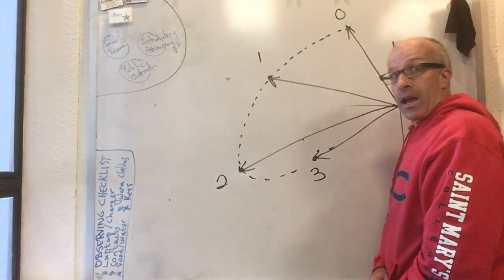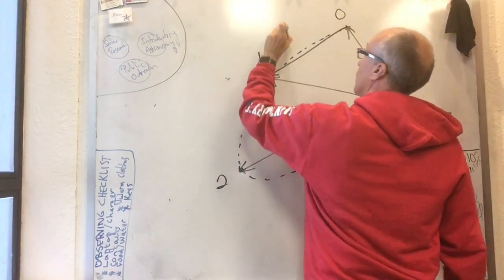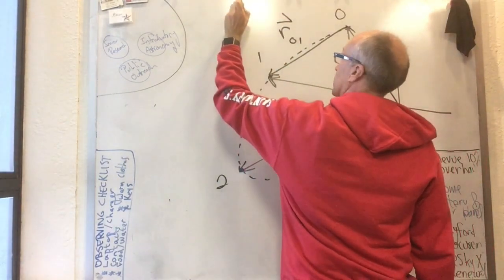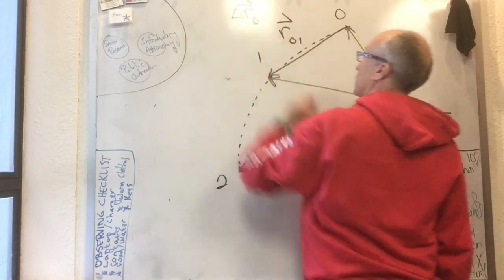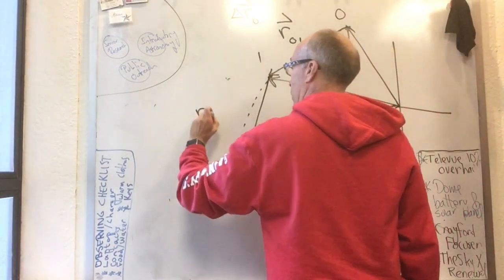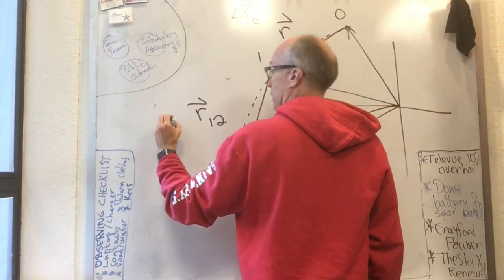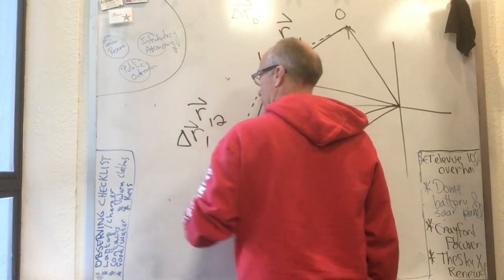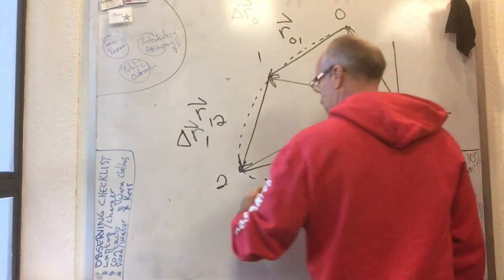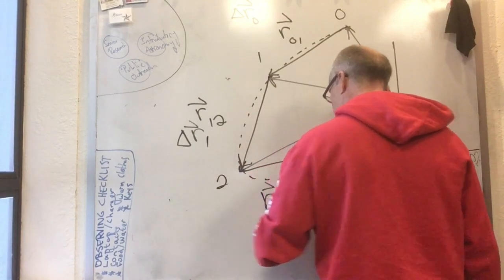Point 3, and this would be what I call r0,1 or Knight calls delta r0 in his text. This would be r1,2 or what Knight calls delta r1. This would be r2,3, or what Knight calls delta r sub 2.